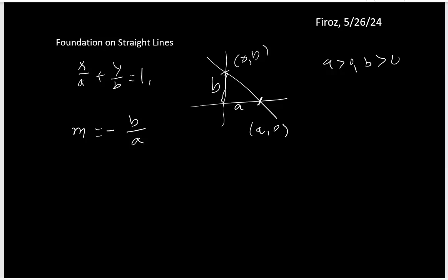Now let me take an example. I have x over 3 plus y over 7 equals 1. So from this I'm getting the intercepts: 3 comma 0, 0 comma 7, and the slope m is negative 7 over 3. You just identify here that a is 3, b equals 7.